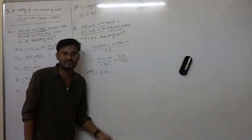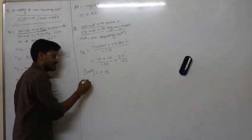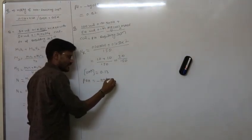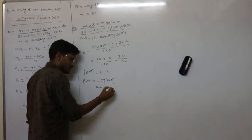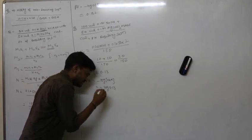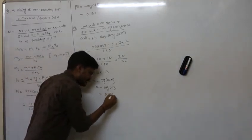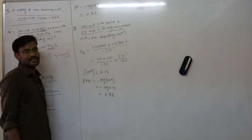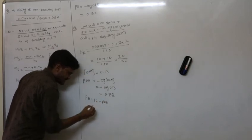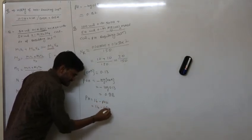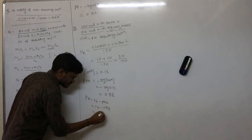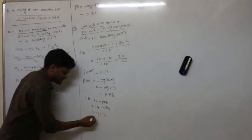Since we have the concentration of OH⁻, we first calculate pOH: pOH = −log(0.13) = 0.88. Then, since it is a basic solution, pH = 14 − pOH = 14 − 0.88 = 13.12. So the pH of the resulting solution is 13.12.